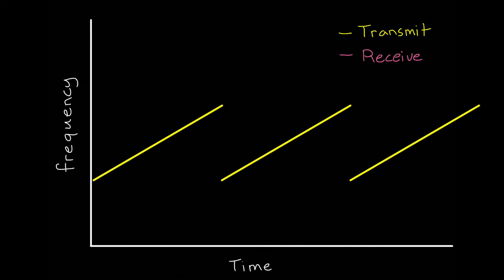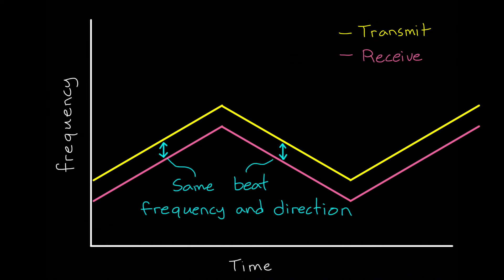For one, instead of a sawtooth modulation, we could use triangular modulation, where the frequency increases linearly and then decreases linearly. Now, when an object is moving away from the radar at zero range, the received frequency is lower, and we get two beat frequencies. One on the rising side of the triangle, which looks like a positive time delay, but then one on the falling side that looks like a negative time delay. In this way, the two time delays cancel out, and we can determine that range is zero, and therefore the beat frequency is produced only by Doppler.